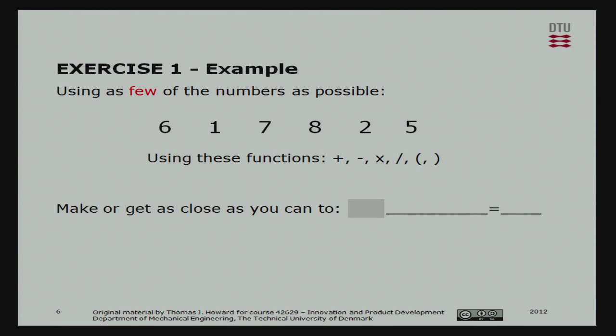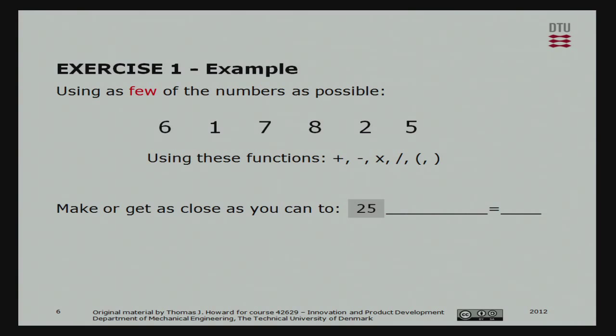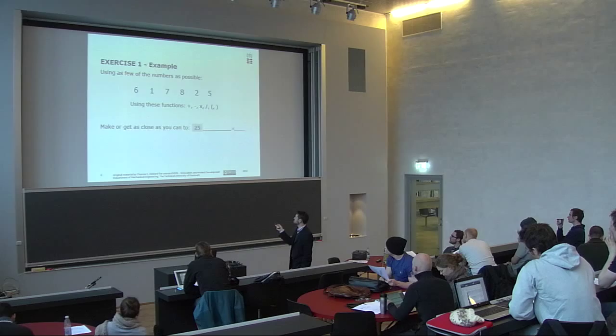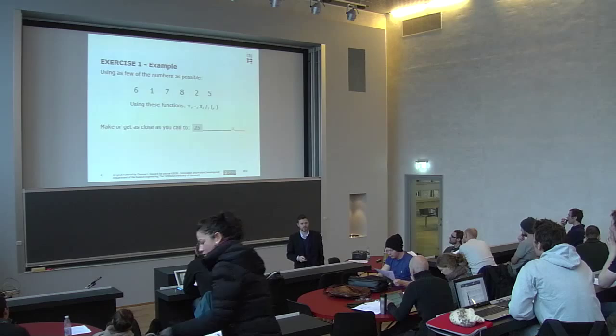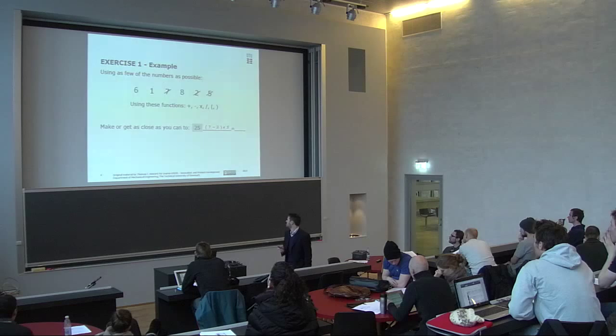The exercise is: use the numbers up there and the functions described below to make the number 25, using as few numbers as possible. Have a little think and perhaps somebody can suggest how to get to the number 25. 7 minus 2 times 5 is 25 — both approaches using three numbers. So, essentially, that's the exercise.